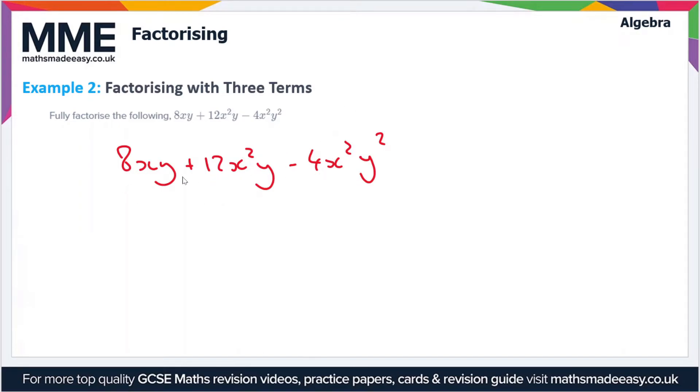Well 8, 12 and 4 all have a common factor of 4. Oh sorry this is minus 4. But nonetheless we can still take a factor of 4 out. So if we take 4 out we're going to be left with 2xy plus 3x squared y minus x squared y squared.